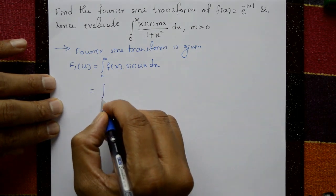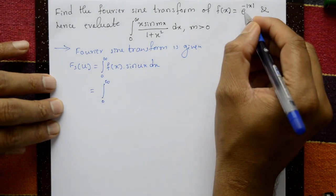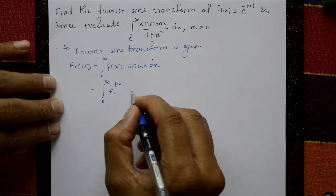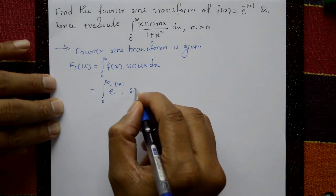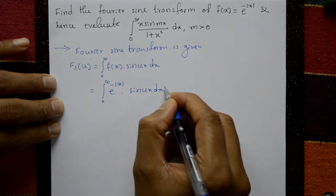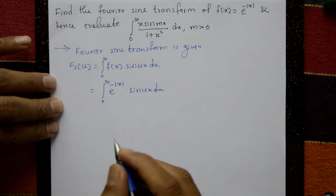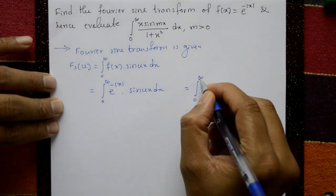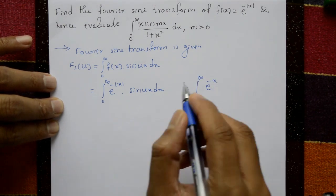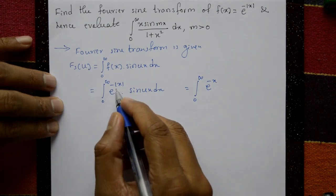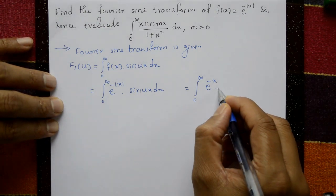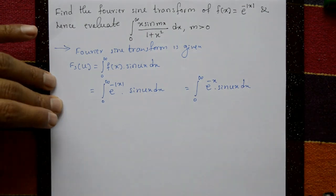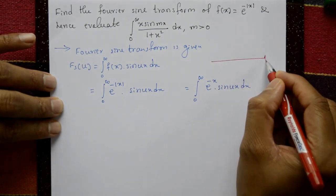Now substituting f(x) = e^(-|x|), we have the integral from 0 to infinity of e^(-|x|)·sin(ux) dx. Since x ranges from 0 to infinity, |x| means plus or minus x, so we take e^(-x)·sin(ux) dx.